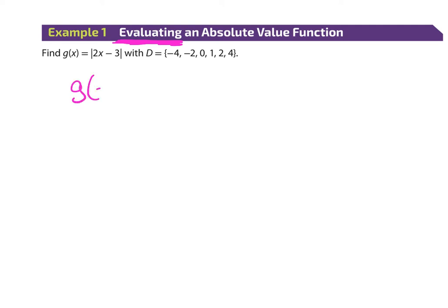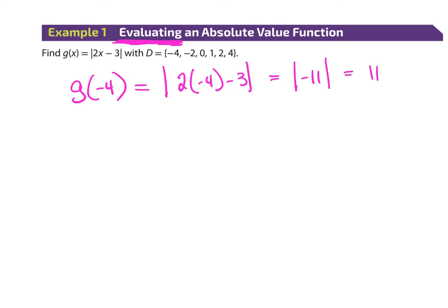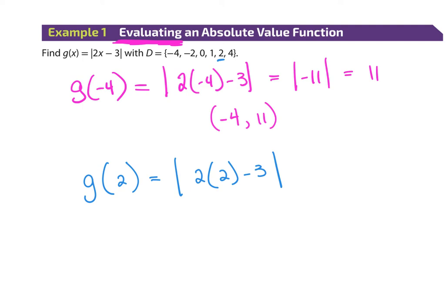For example, g(−4) means plug negative four into the absolute value function and solve. Solve the inside first: 2 times negative four is negative eight, minus three is negative eleven. But we're talking absolute value, so the answer is positive eleven. That tells me on the graph my xy value is x=−4, y=11. For g(2): 2 times 2 is 4, minus 3 is 1. Absolute value of 1 is just 1.